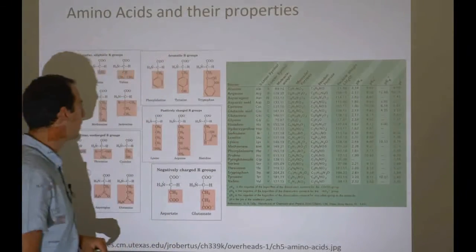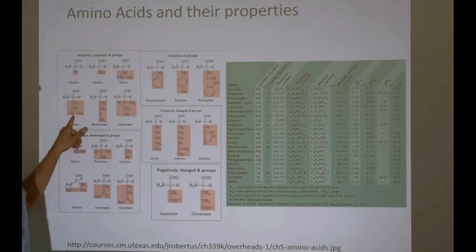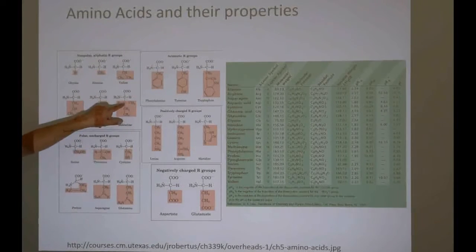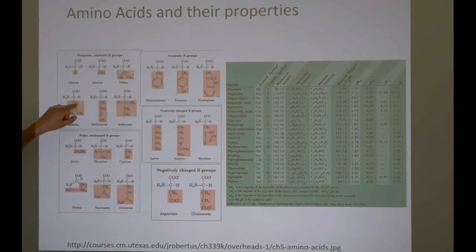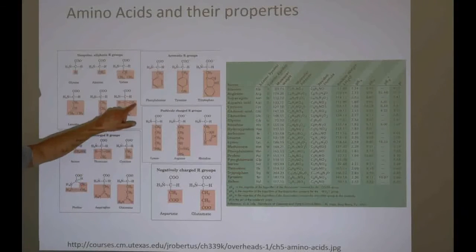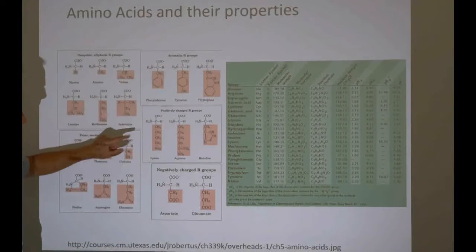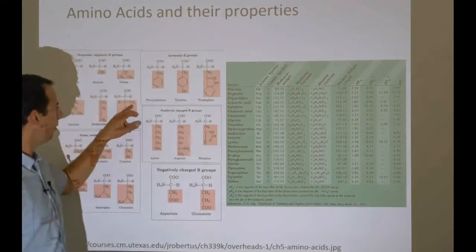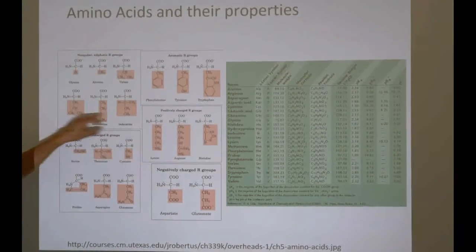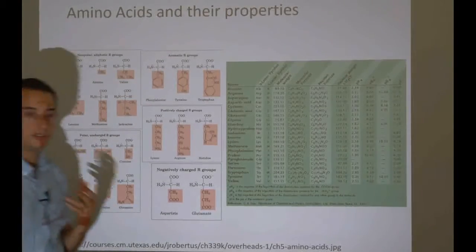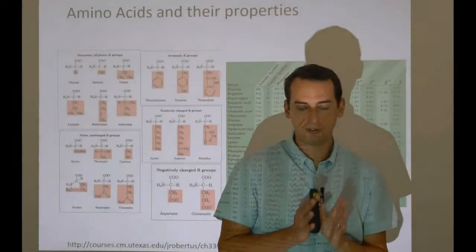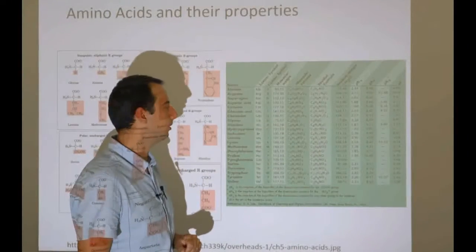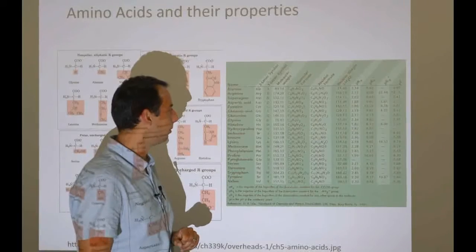However there is one notable exception here, which are isoleucine and leucine, because they have exactly the same mass. It is 131.18 Daltons. Now how can this be? It is quite simple. Let's have a look at their structures. Leucine has one, two, three, four carbons in the side chain, and so does isoleucine: one, two, three, four carbons. And then it has two, three, six, nine hydrogens in the side chain. And isoleucine has three, six, nine. So they have exactly the same chemical composition. They are not exactly the same however, because this methyl group is at a different location than there. So essentially this methyl group, when you swap it down one, you get leucine. They are different in structure, they are different in volume, they behave differently in the protein, but they have exactly the same mass. So a mass spectrometer cannot easily tell them apart. It's the only notable exception. All the other amino acids have a clearly distinguishable mass in principle.